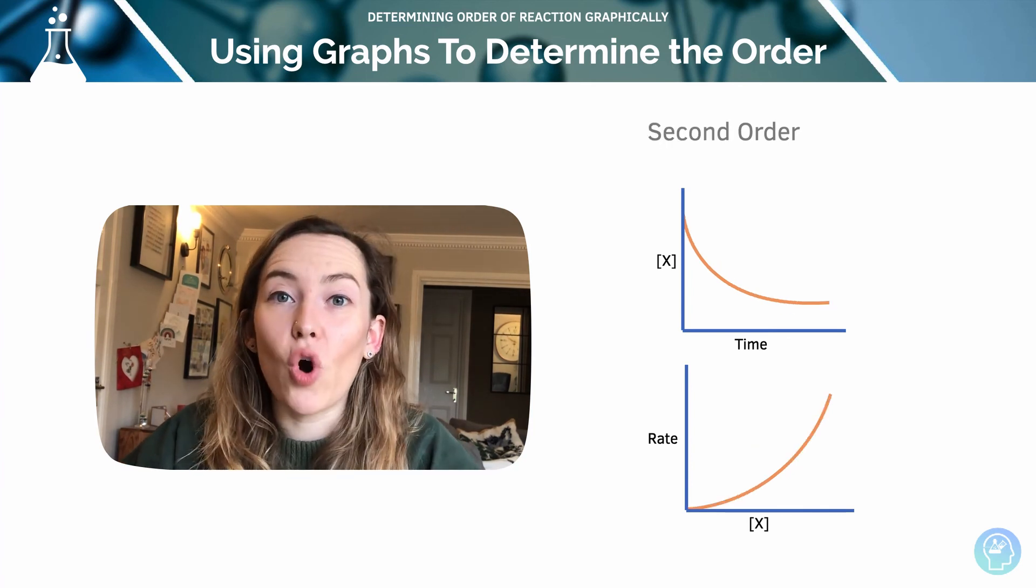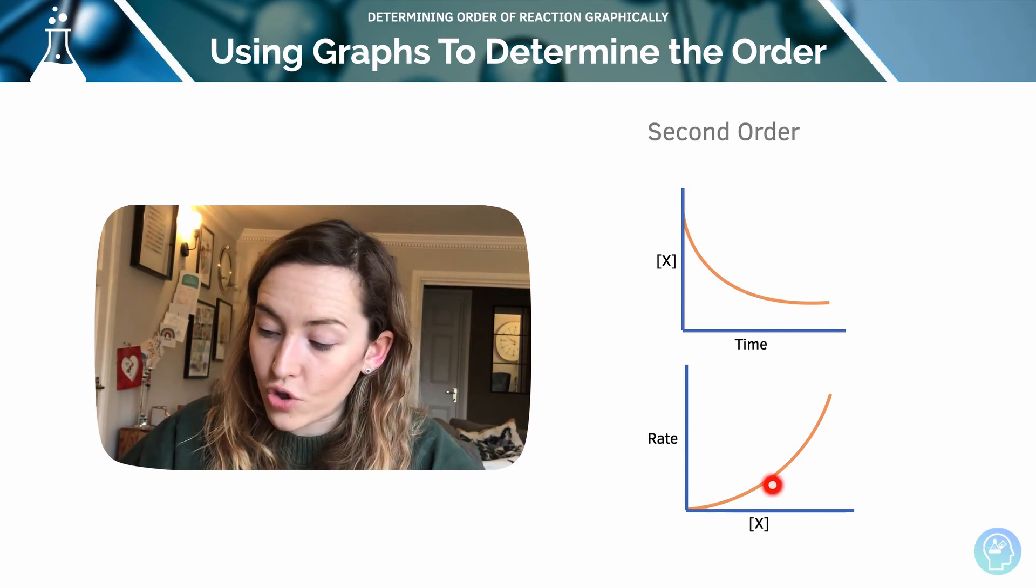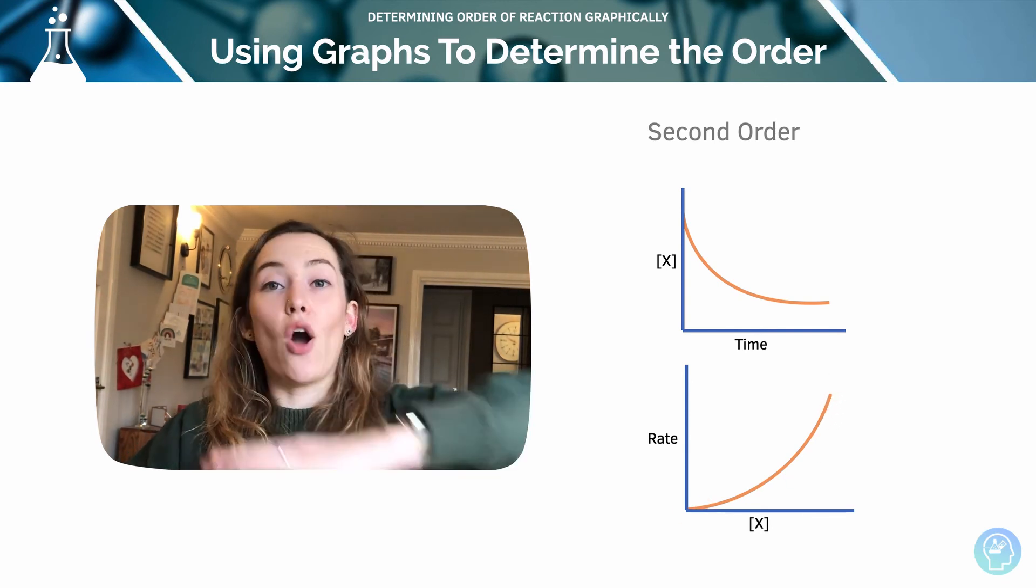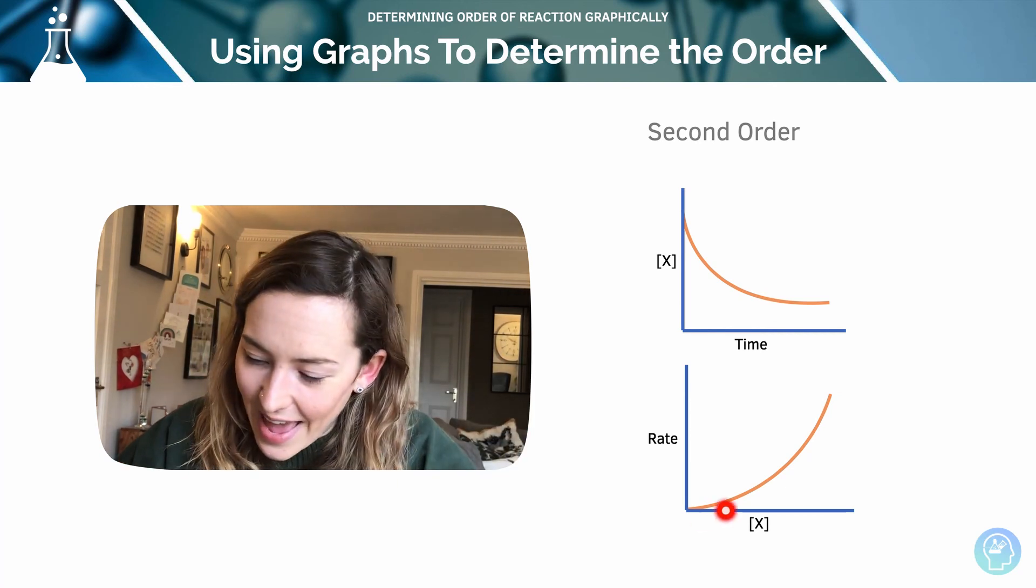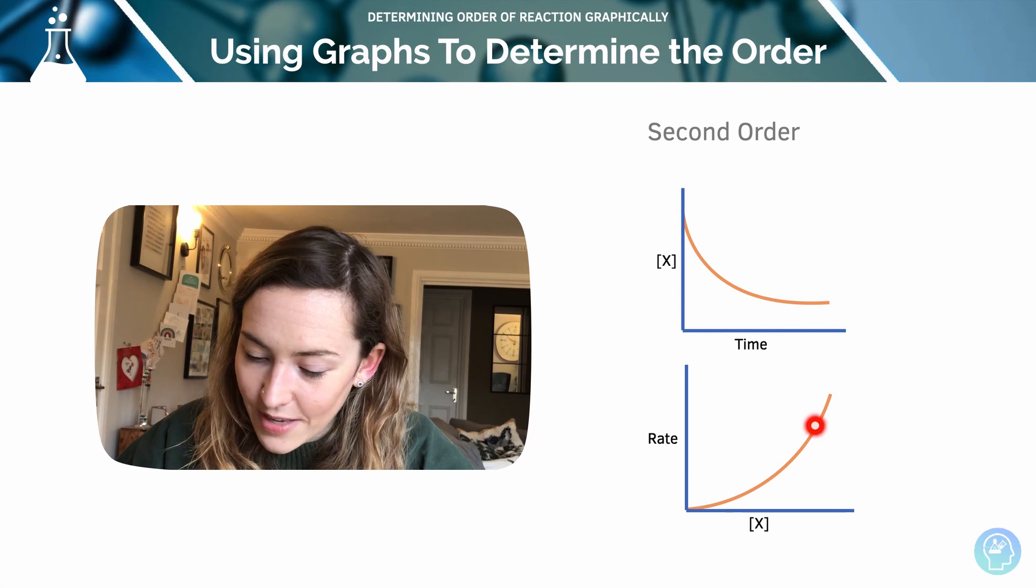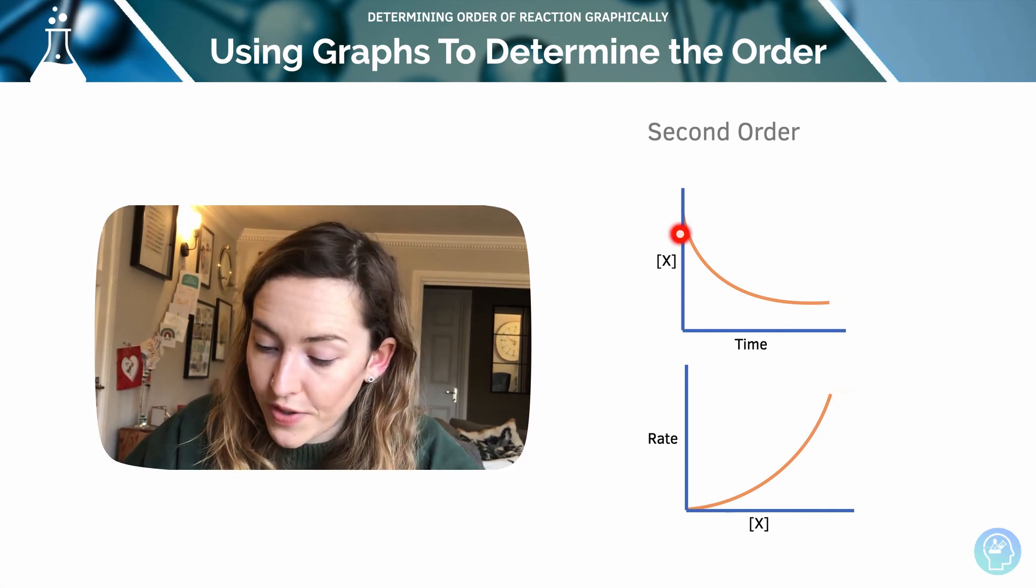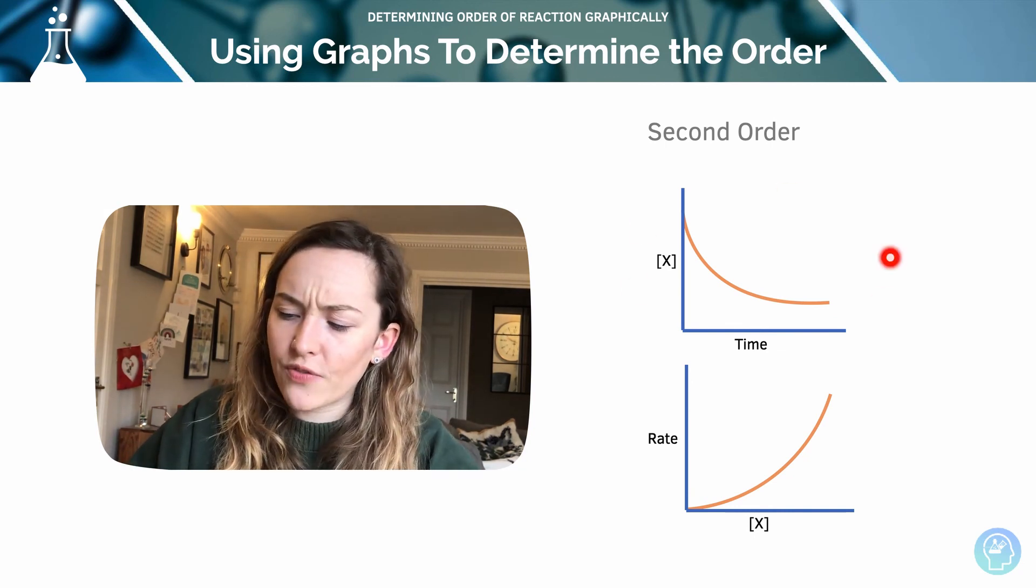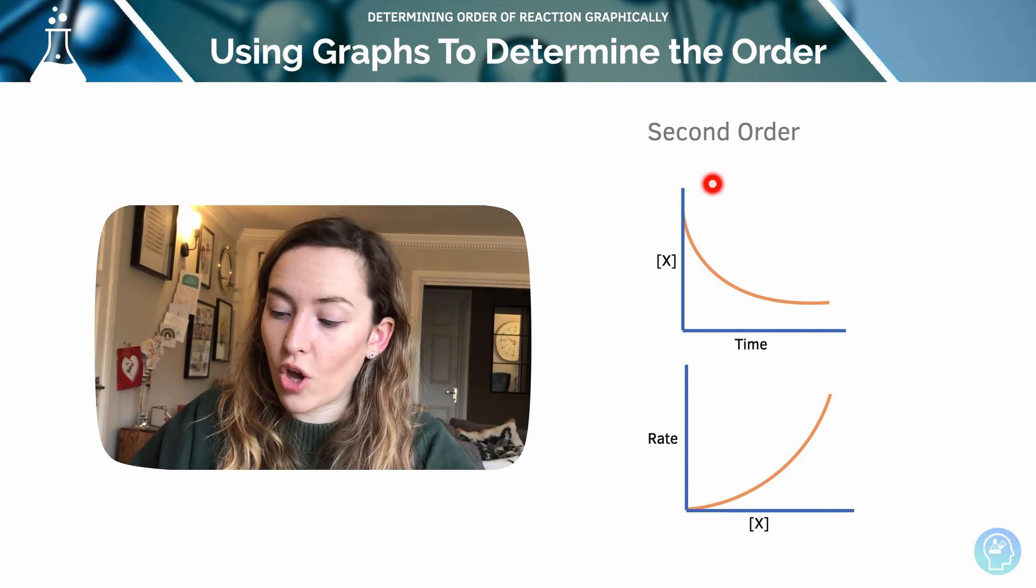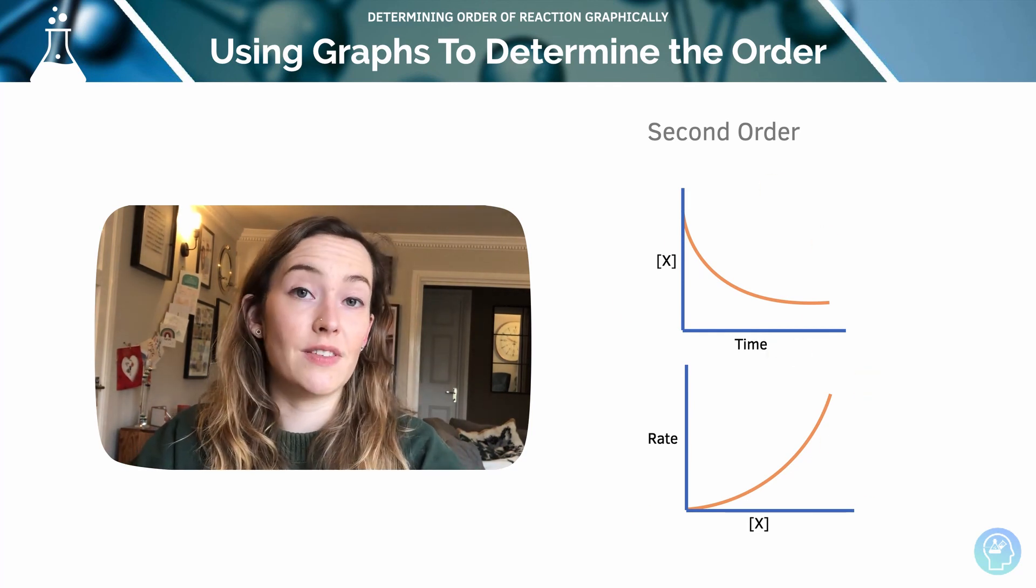Here we've got a second order example. So rate increases with concentration, but it's not a horizontal line. It's not a dead straight line. It is a curve line like this. So the curve is produced with both. When you have a curve of both these types of graphs, you know it is second order. It's harder to differentiate between first and second order when we look at concentration versus time. You need to plot a rate versus concentration graph to see it.